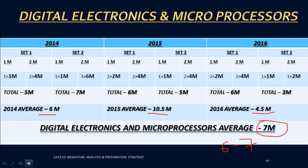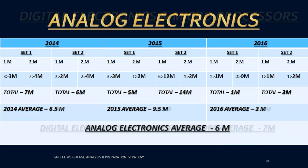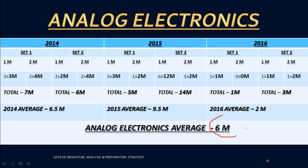Analog Electronics has an average of about six marks. The 2014 average was 6.5, the 2015 average was 9.5, and 2016 was four marks. So roughly six marks can be expected from Analog Electronics.